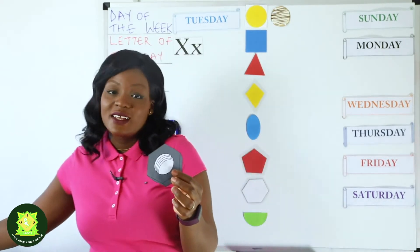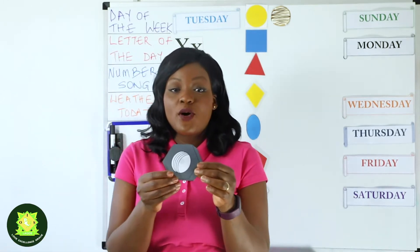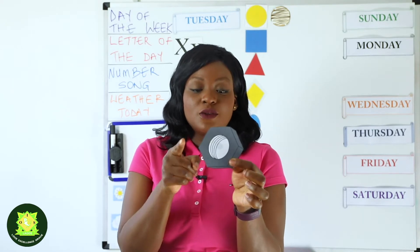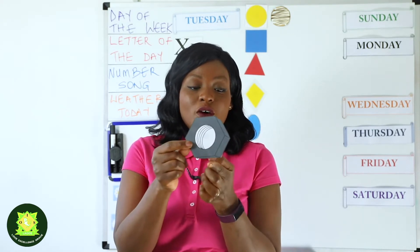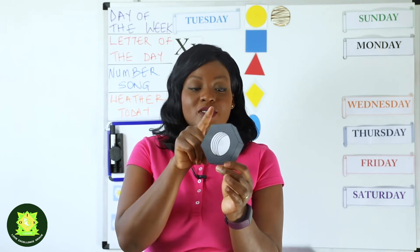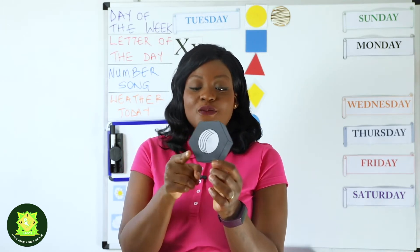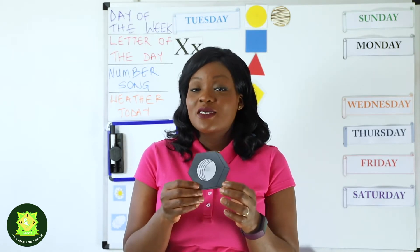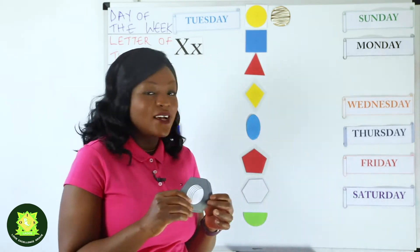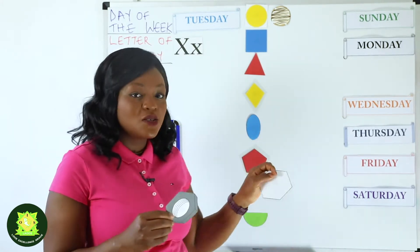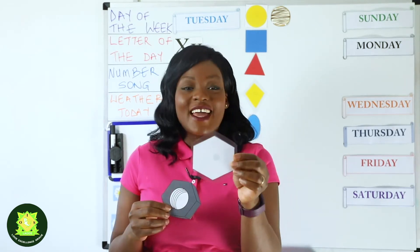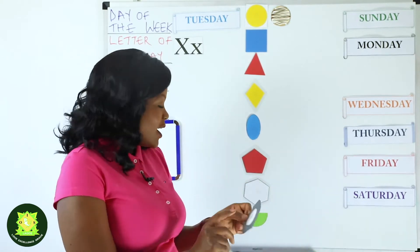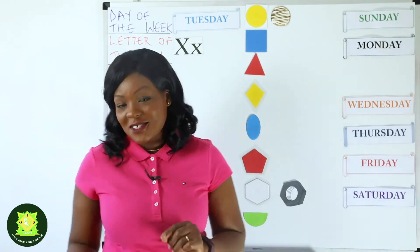Now I have this shape — this is a nut for a bolt. Can we count how many sides this has? It has one, two, three, four, five, six. Let's count it one more time: one, two, three, four, five, six. So this has six sides — what shape has six sides? That was a hexagon. So let's put it right next to the hexagon. Well done everyone, you are doing a fantastic job.